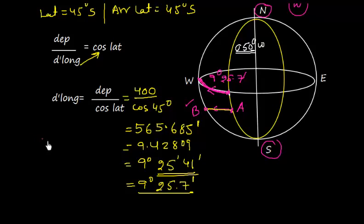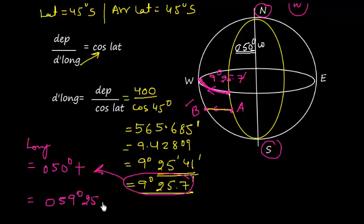So I can find out that my position longitude is going to be 050 degrees plus 9 degrees 25.7, which gives me 059 degrees 25.7 west. That is the answer. This is the longitude, and the latitude remains the same.